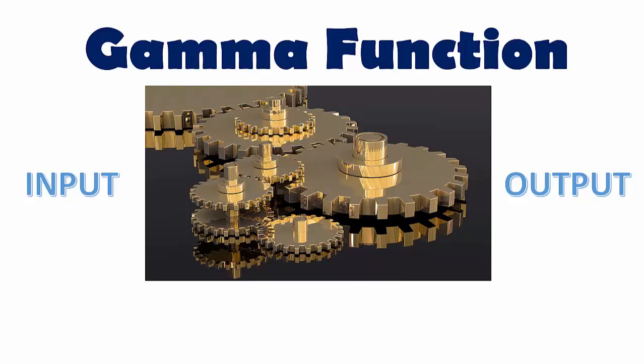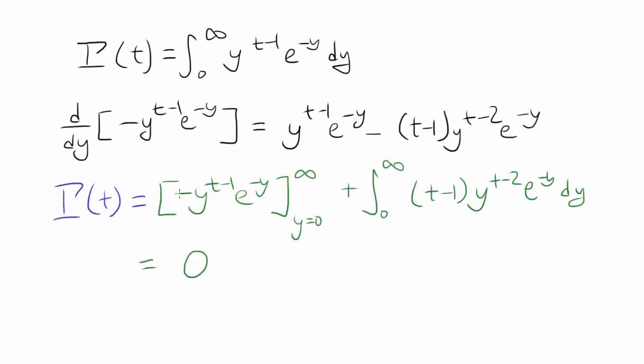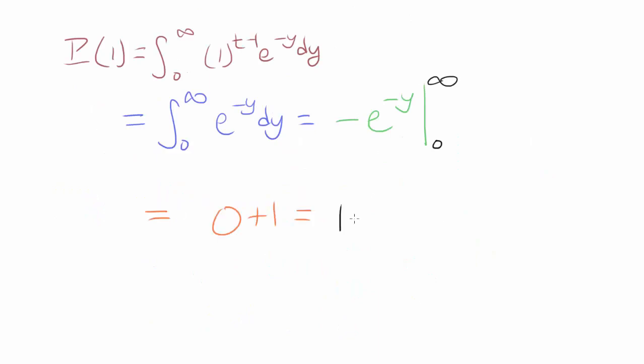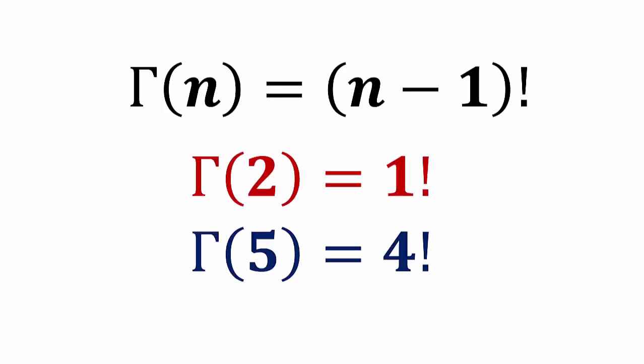So what about the gamma function? Using some calculus and integration by parts, we can figure out what gamma function is going to do to our input value. And it turns out, if you plug n into gamma function, you are going to get n minus 1 factorial out of it.